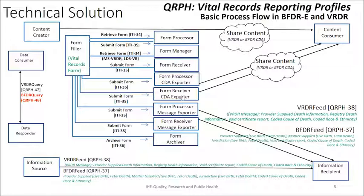For the technical solution, we have multiple approaches to convey the vital records information from the provider to the jurisdiction and round trip between the jurisdiction and the National Vital Statistics Agency. At the top of this slide, we see the content creator, which shares a CDA document reporting either the death, birth, or fetal death report between these entities. At the bottom, we see the information source sending an HL7v2.6 message to the information recipient. Within the messaging are multiple options, which are designed to constrain the information for what is needed between provider and jurisdiction and jurisdiction to the national, as well as coded cause of death and coded race and ethnicity returned from the national entity to the local jurisdiction.